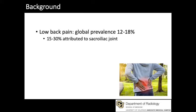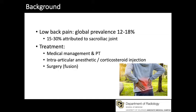Lower back pain is one of the most common musculoskeletal complaints in the world, with a global prevalence of about 12 to 18 percent. Of that population, between 15 to 30 percent of cases are attributed to sacroiliac joint osteoarthritis. First-line treatment consists of conservative management. If conservative management fails, more invasive treatments such as injections or fusion are possible options.